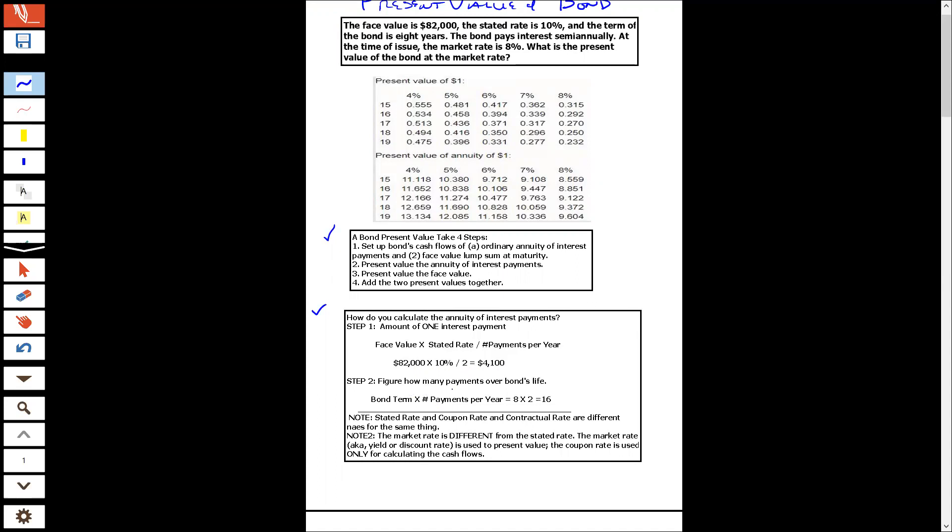And then you have to figure out how many bond payment, how many interest payments are over the bond's life. You take the bond term times the number of payments per year. It tells us that the term of the bond or length of the bond is eight years. And there's two payments a year. So there's actually going to be 16 interest payments.